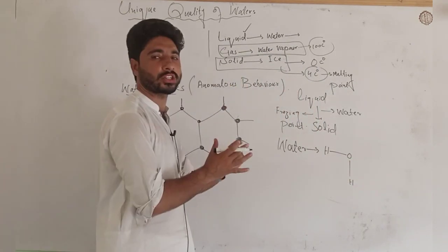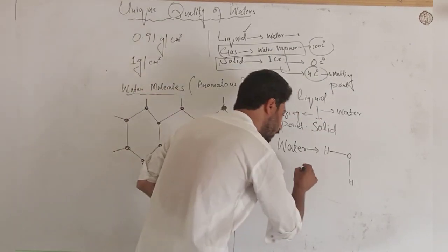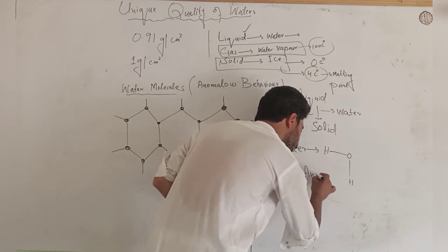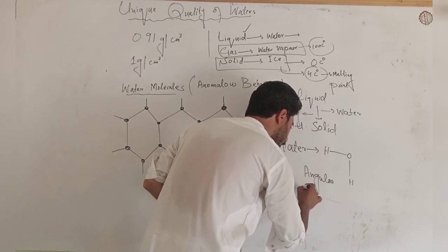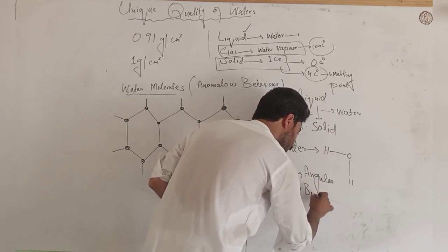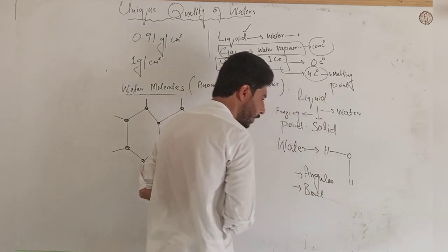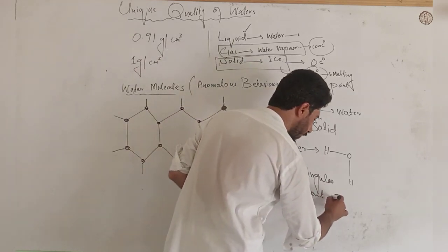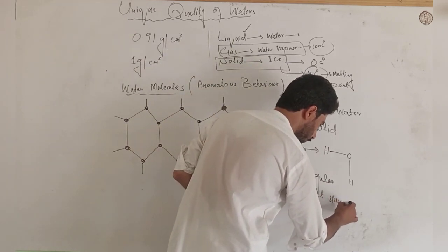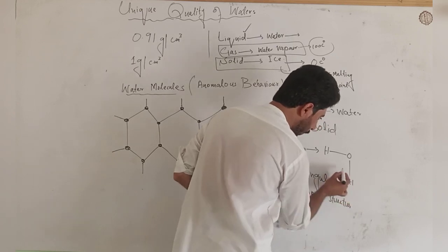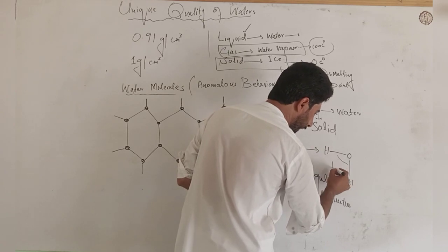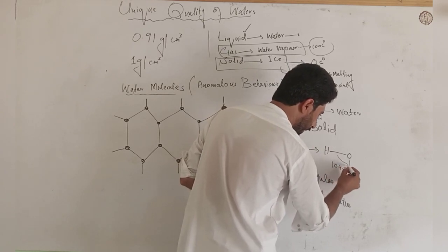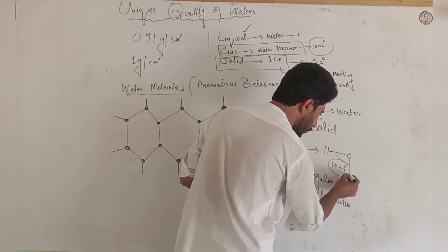The first one is angular structure, the second one is angular or bent structure, and the third one is a greater angle. The water molecule has a bent structure, and the bond angle is 104.5 degrees — that is the H-O-H bond angle.